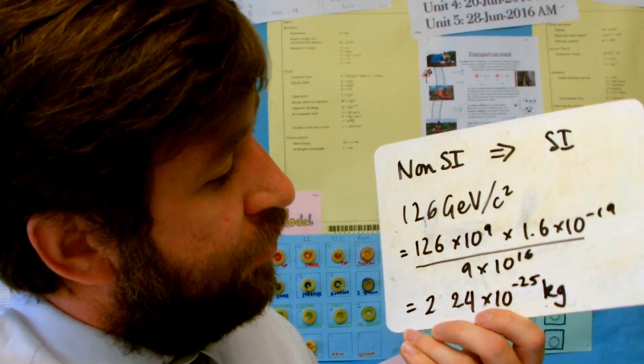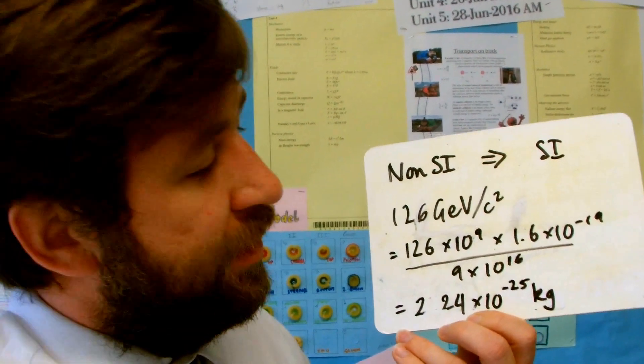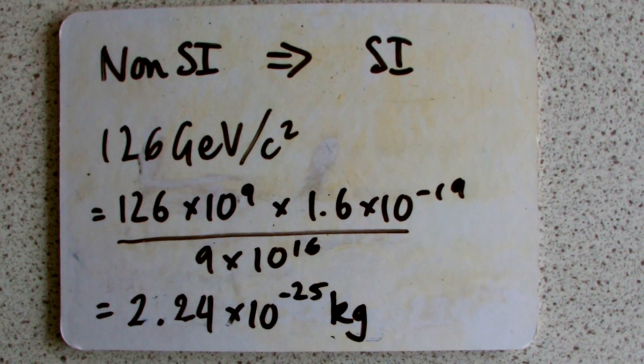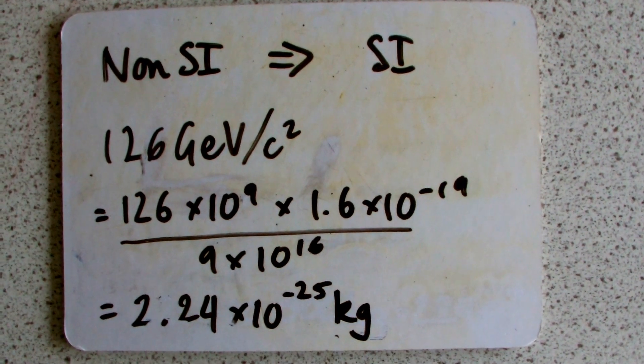That answer comes out as 2.24 times 10 to the minus 25 kilograms. Now, that's a really good example of when you should check: is my answer sensible? The first answer I got was an absolutely massive number — like millions of kilograms. I realised I must have done something wrong, because there's definitely not millions of kilograms in a Higgs boson. So I went back through my calculation, and because I'd set it out clearly, I could see that in the calculator I'd put times 10 to the minus 16 instead. So that's a good way to check your errors.